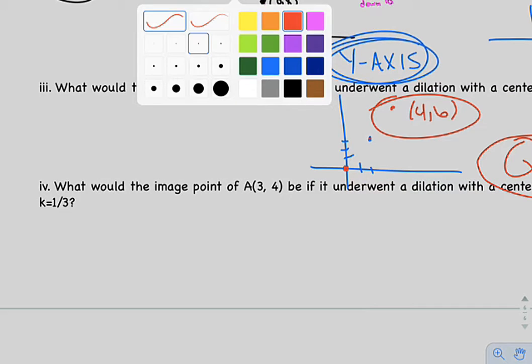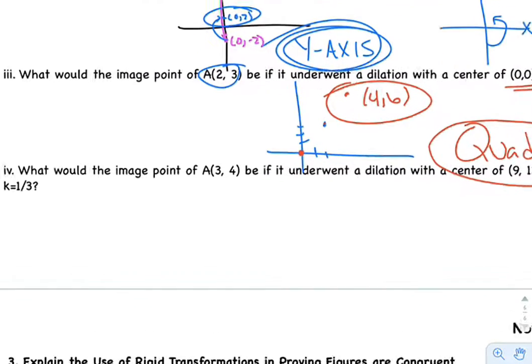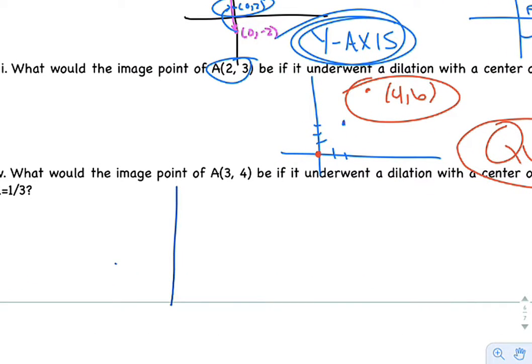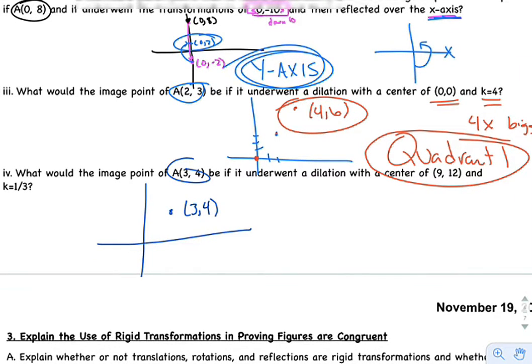Alright, one last one and we're done with this section. So first, we have again we have (3,4), approximately right there, and it undergoes a dilation with center (9,12) and k equals one-third. Wow, well that's pretty complicated.